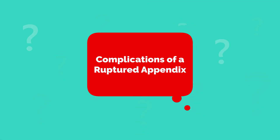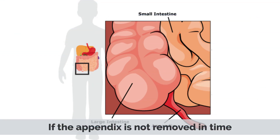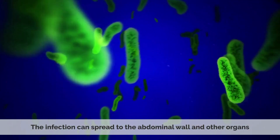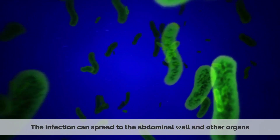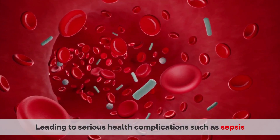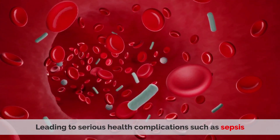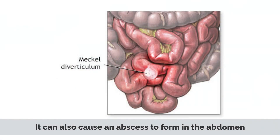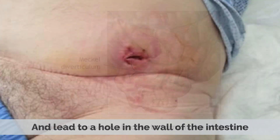Complications of a ruptured appendix. If the appendix is not removed in time, the infection can spread to the abdominal wall and other organs, leading to serious health complications such as sepsis, which is a life-threatening condition. It can also cause an abscess to form in the abdomen and lead to a hole in the wall of the intestine.